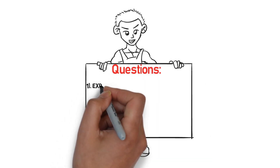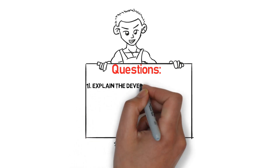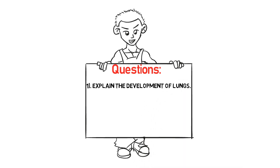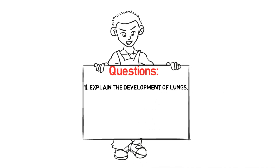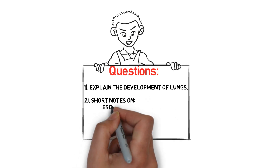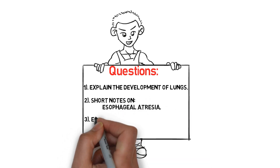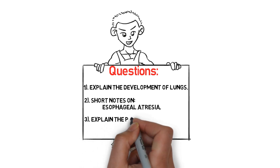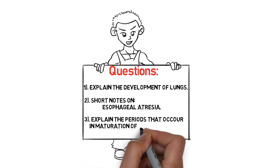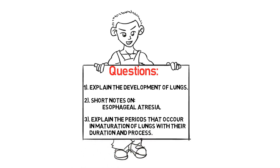The exam questions related to this topic include: elaborate on the development of lungs; write short notes on esophageal atresia; and explain the periods that occur in maturation of lungs with their durations.